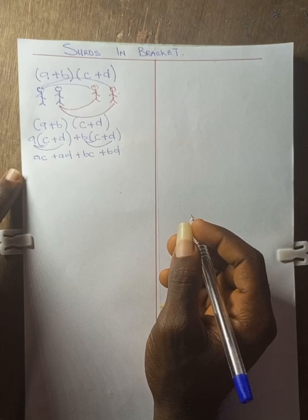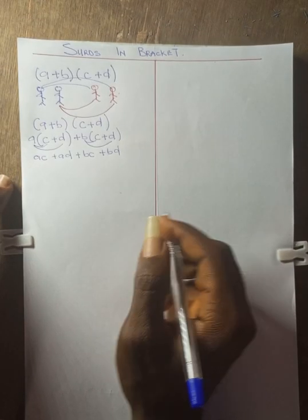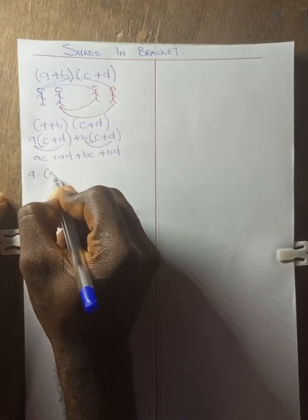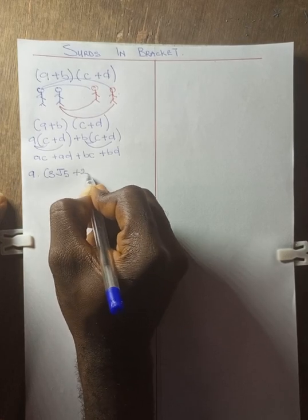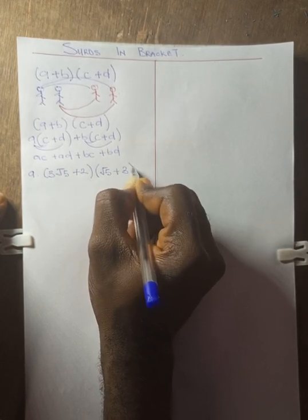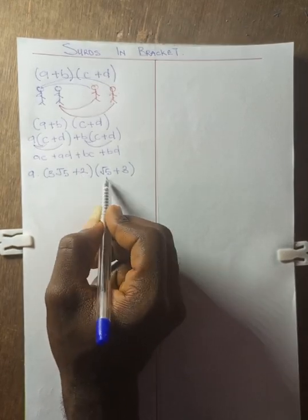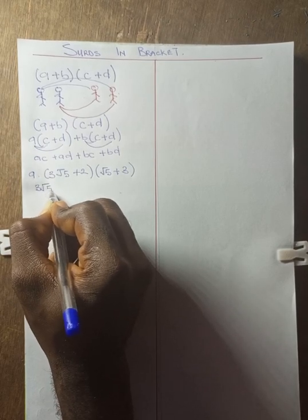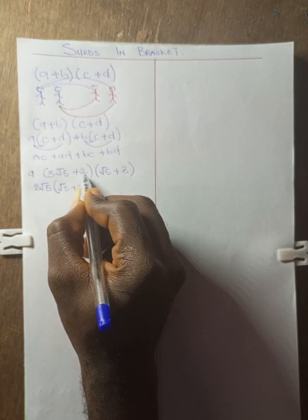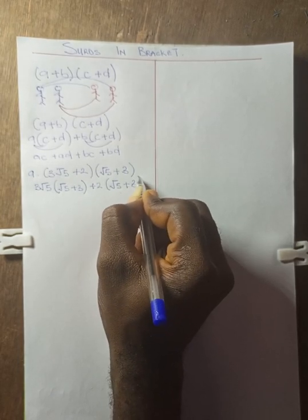Now back to our surds in brackets. When you get surds inside brackets, we use the same style. Let's look at some examples. If you get something like (3√5 + 2)(√5 + 3), in a case like this you expand: this one goes to greet these two, then this one also goes to greet these two. So 3√5 comes outside, you open brackets: root 5 plus 3, then plus 2 also greets these two, so plus 2 open brackets root 5 plus 3.